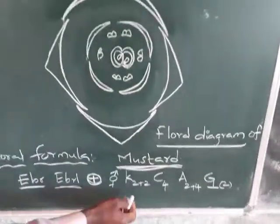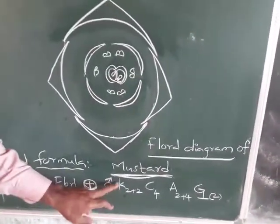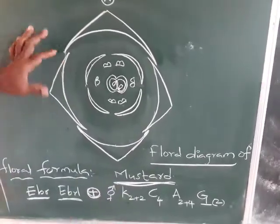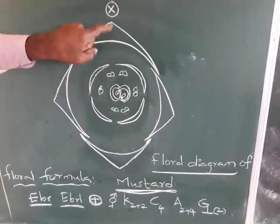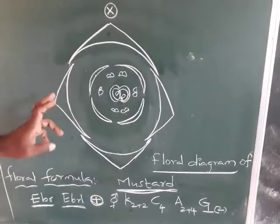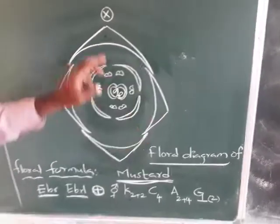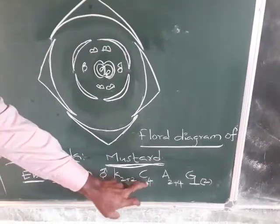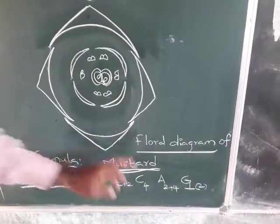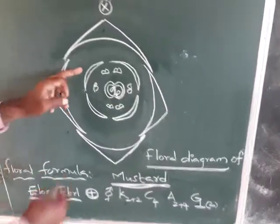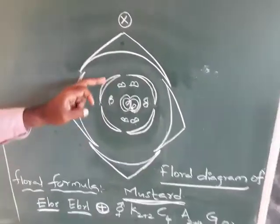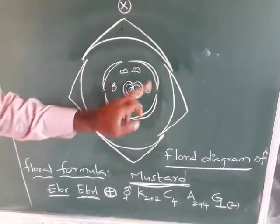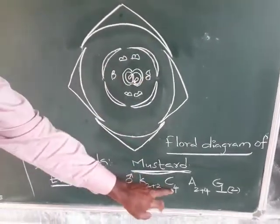The calyx has 4 sepals arranged as 2 plus 2 — two outer and two inner — so K is 2+2. The corolla has 4 petals arranged in the second layer of the flower, so C equals 4.